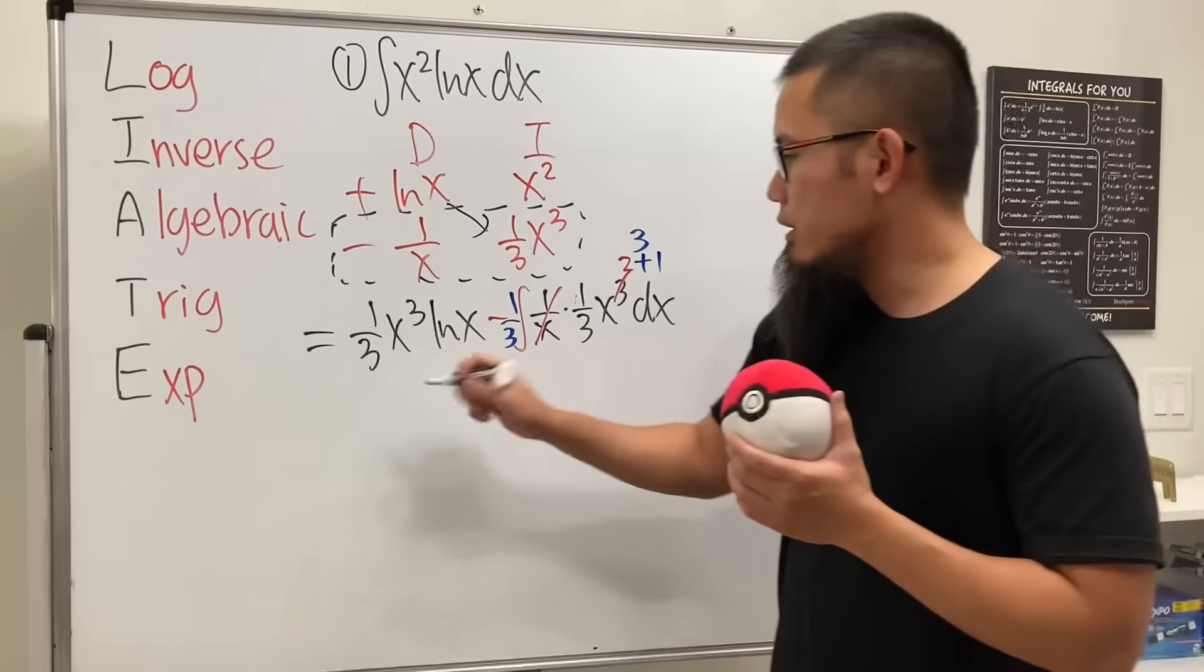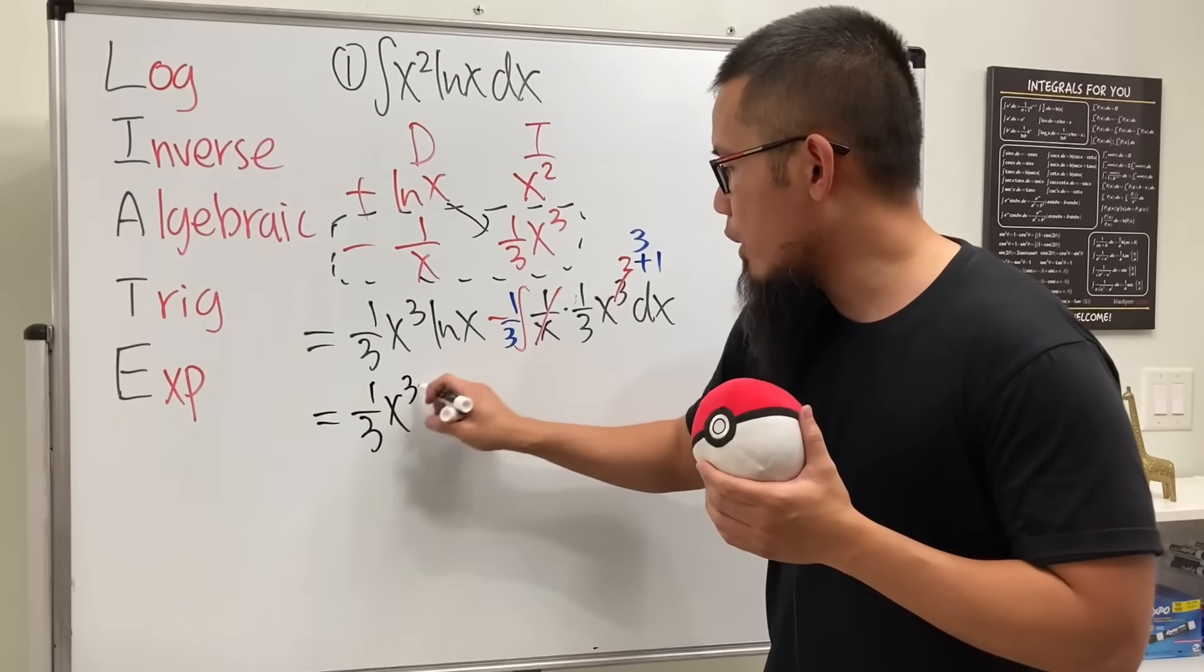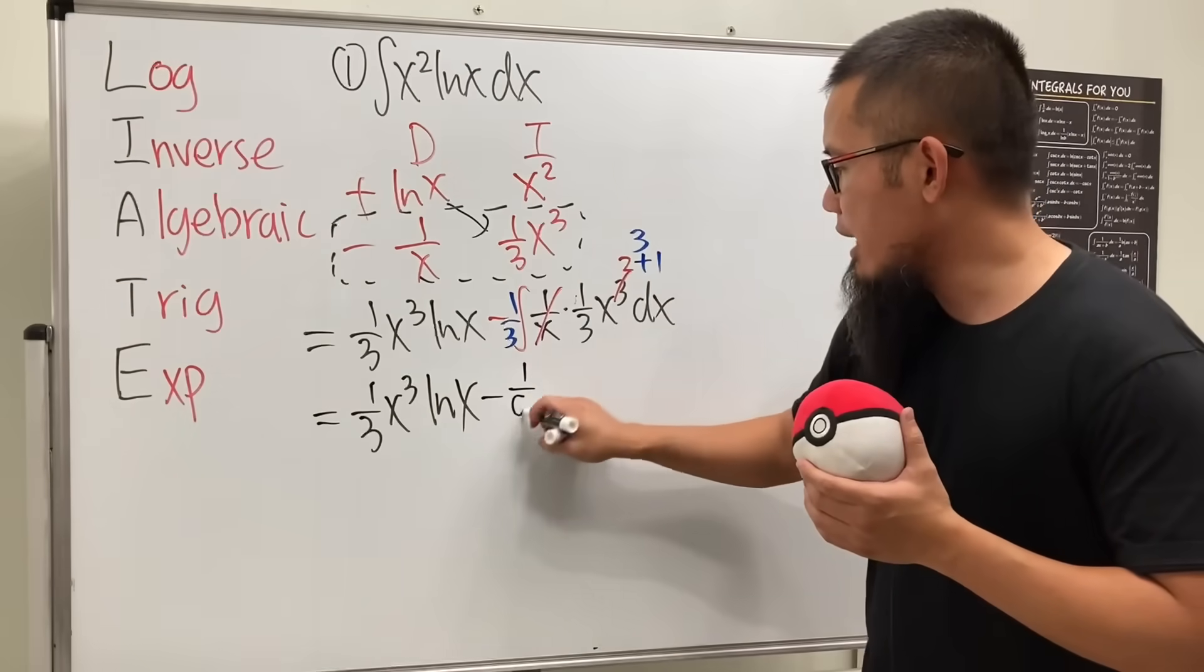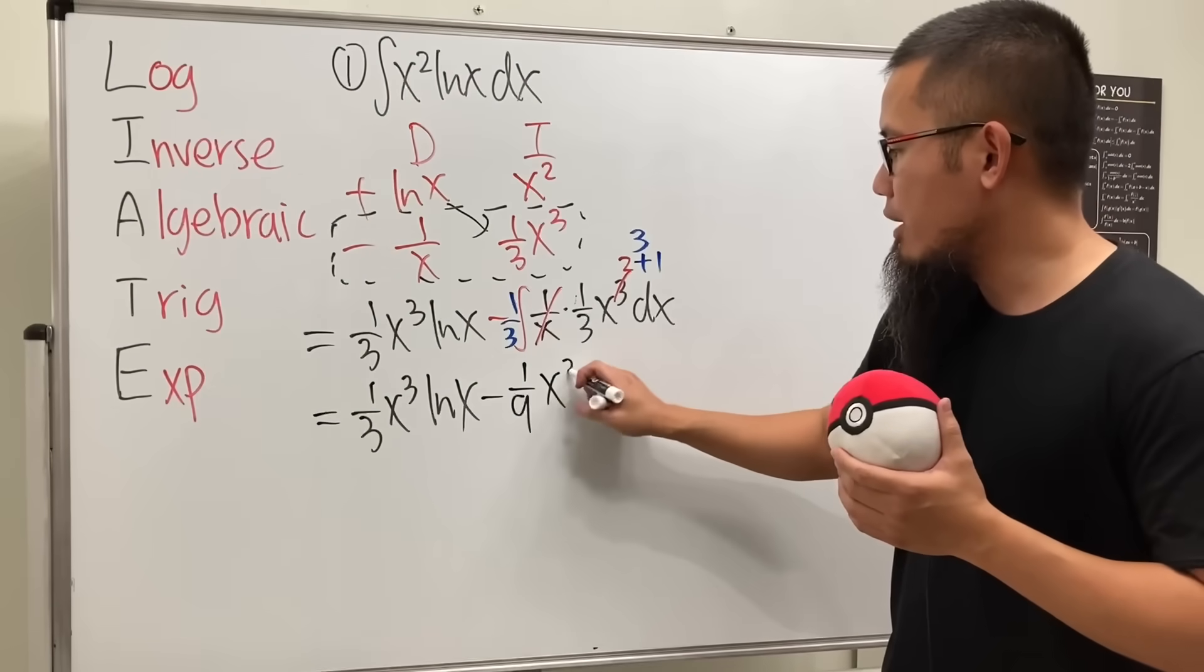So all in all, this right here is just 1 over 3, x to the third power ln x, minus 1 third times 1 third, so 1 over 9, and then x to the third power. Done. So this right here is very nice.